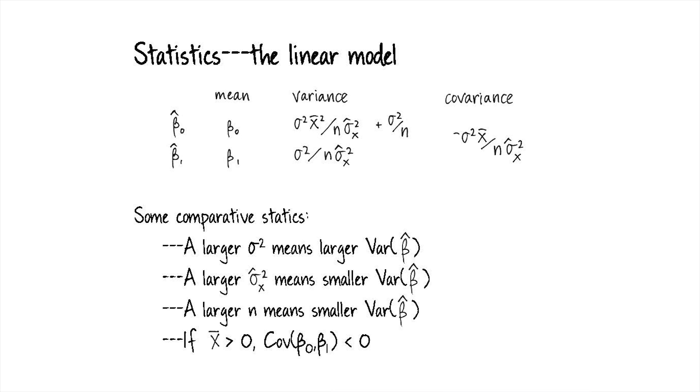How is that going to affect our estimates? Well, you can just look at the formulas for the variance and covariance of β̂, our estimates. You can see that if we have a larger σ², that means the variance of β̂ is larger. I'll show you a picture of that in a second.